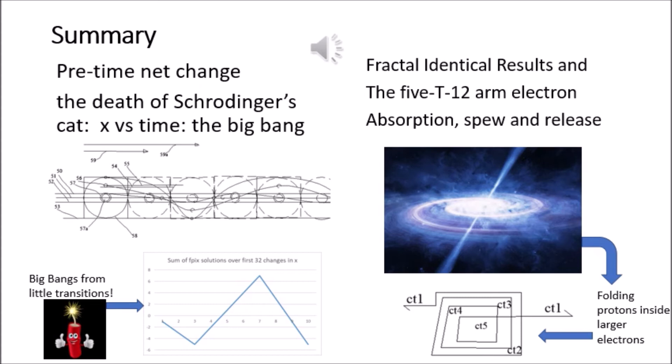Fractal identical results are a consequence, and the five T12 arm electron being less folded is bigger than the contained proton within it. Indeed, the black hole is smaller still than the surrounding galaxies, even though it holds a comparable amount of information to an entire galaxy. The function of the fractals is identical.